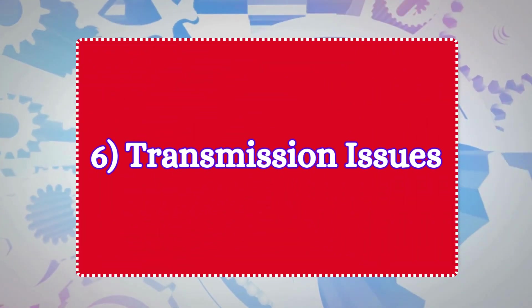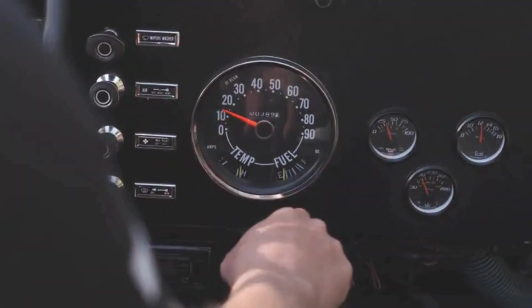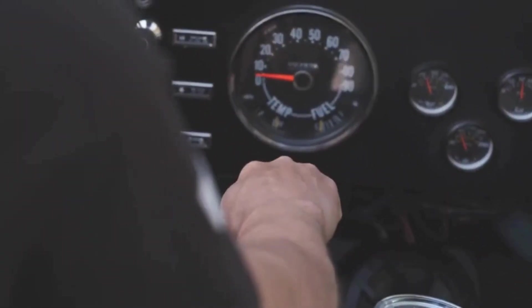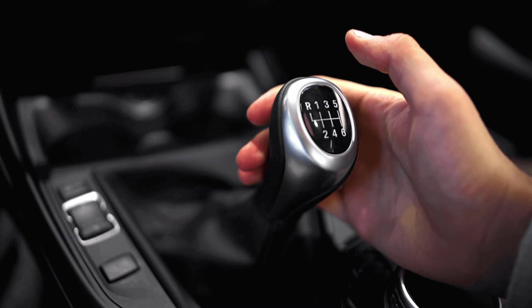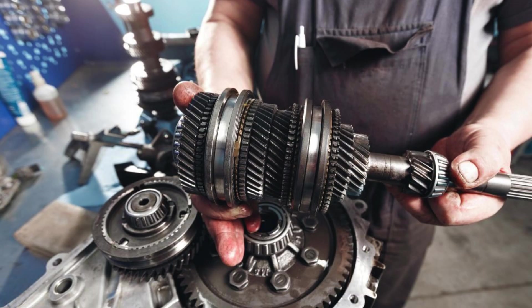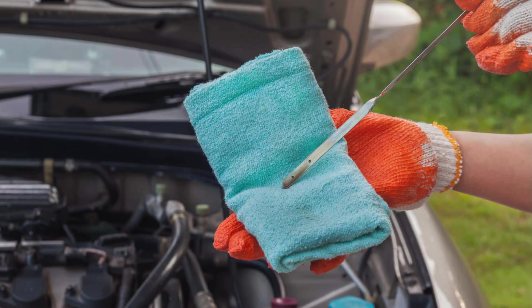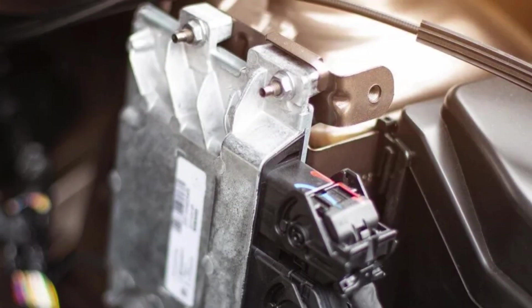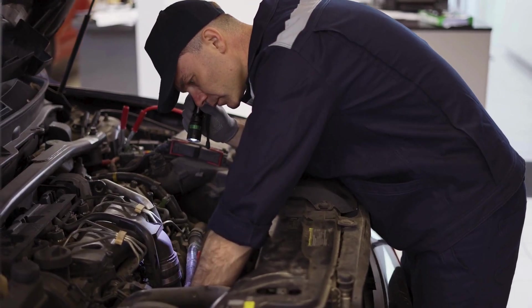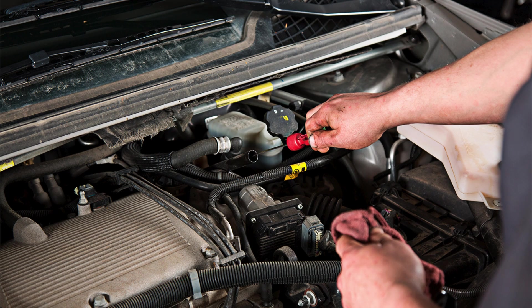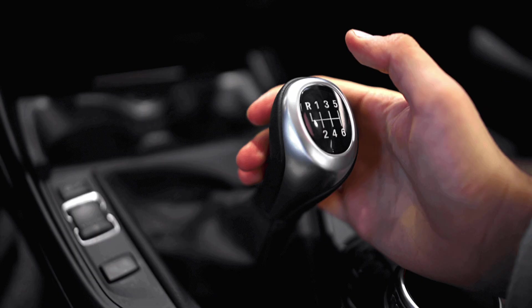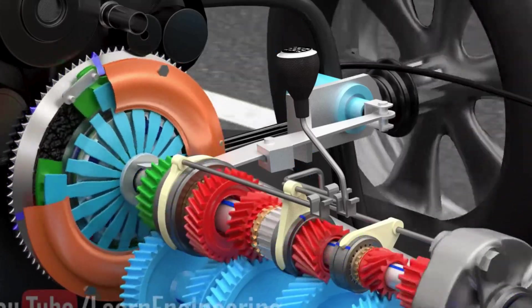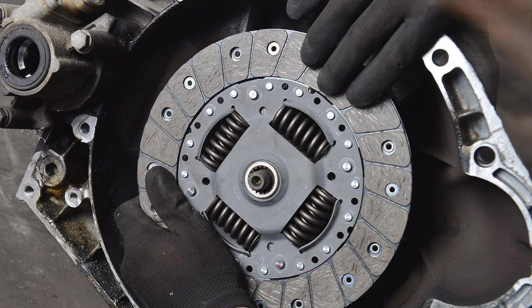6. Transmission Issues. If the jerking happens while your car is shifting gears, you might be dealing with a transmission issue. This can happen in both automatic and manual transmissions, and it's often a sign of worn-out gears, low transmission fluid, or a failing transmission control module. If the issue is related to the automatic transmission, check the transmission fluid level and quality. In a manual car, jerking may be caused by improper clutch engagement. You may need to adjust or replace the clutch.